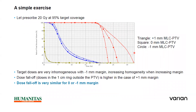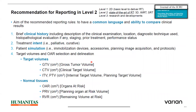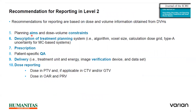In summary, one could go with zero margin or minus 1 mm margin along with target coverage prescription. The recommendations for reporting include a brief clinical history: description of clinical examination, location, diagnostic technique, treatment intent, and patient simulation devices. Target volume selection and delineation — how the clinician accounts for all volumes and how normal tissues are drawn — must be documented. Planning aim and dose-volume constraints should be defined, as well as a description of the treatment planning system. Prescription, patient-specific QA, delivery verification, and dose reporting for dose to the PTV are all applicable.